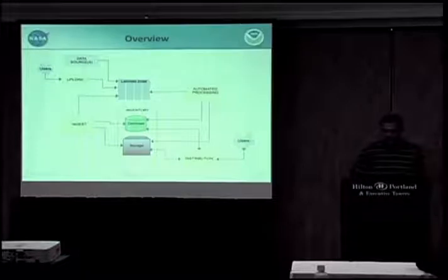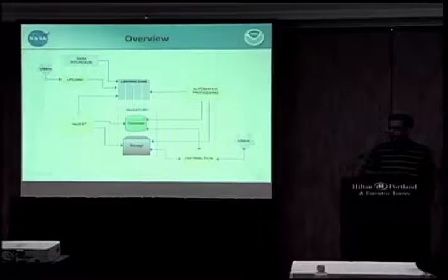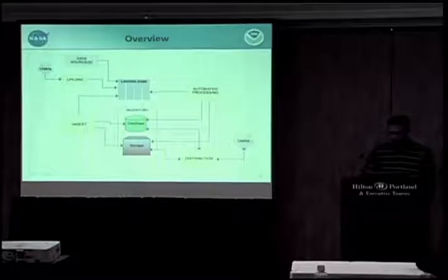So at a high level, these are the major functions that we want to support or we support. We get data from various data sources onto our landing zone. Then we have ingest process, which gets the data from the landing zone, puts the metadata information in the database, stores files in the storage. There's automated processing where it's looking for information in the database, get the files from storage, process runs and generates outputs. Outputs go back to the landing zone where it gets ingested into the system. There's distribution component that distributes data to the users and upload components to upload data on the system.